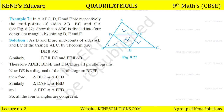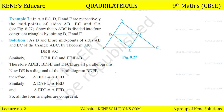As D and E are the midpoints of sides AB and BC of triangle ABC, by the theorem, DE is parallel to AC. Similarly, EF is parallel to AB and DF is parallel to BC. Therefore, ADEF, BDEF, and DFCE are all parallelograms.